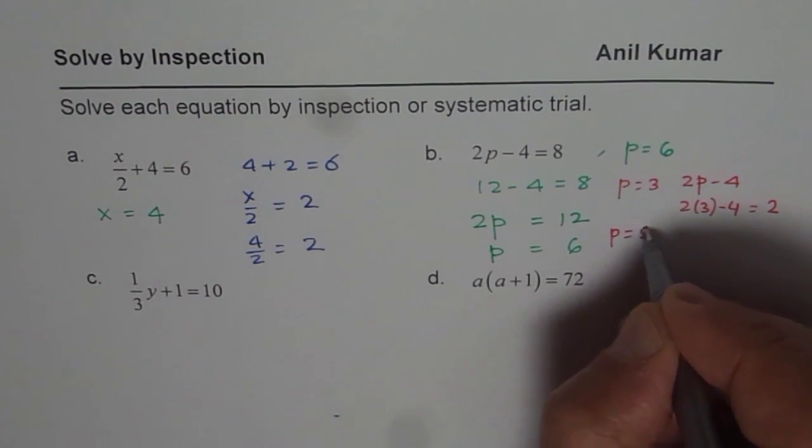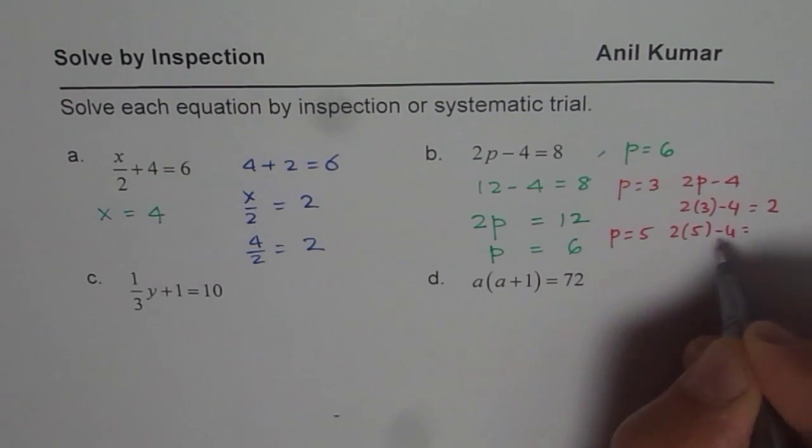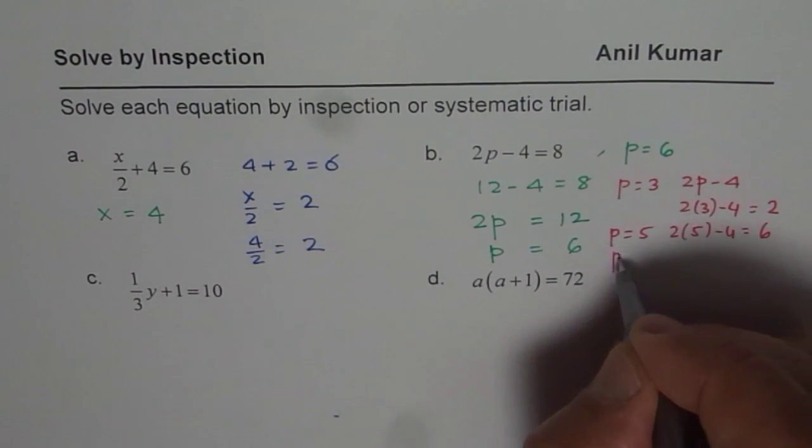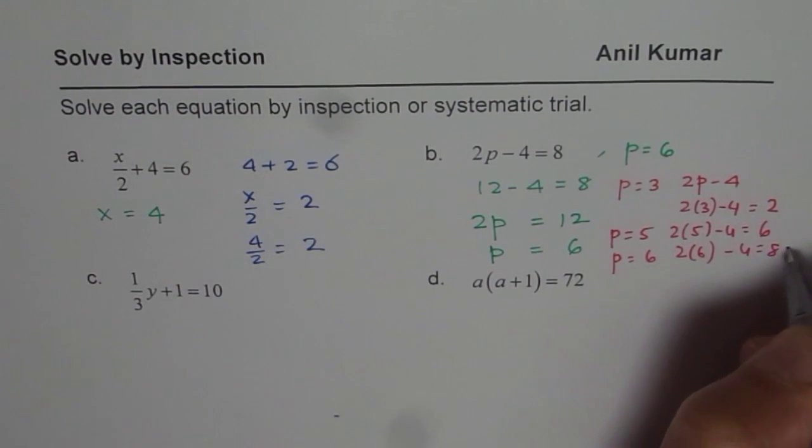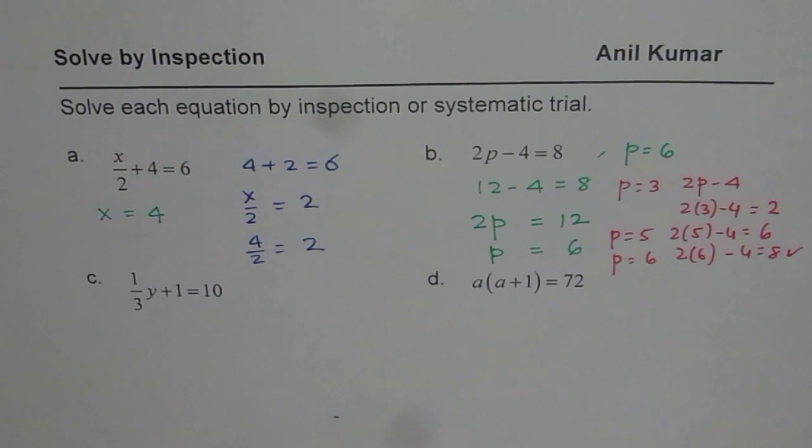So I should try a bigger number. So let p be equals to 5. So in that case, it will be 2 times 5 minus 4. So 10 minus 4 is 6, it is even smaller than 8. So we need to get to the next number. We can try p equals to 6. And then we get 2 times 6 is 12. 12 minus 4 is 8. So that should be the solution. So that is how you can do systematic trial and get the result also. So these are 2 methods by which you could solve equations. There are other methods also which we will discuss in next video.